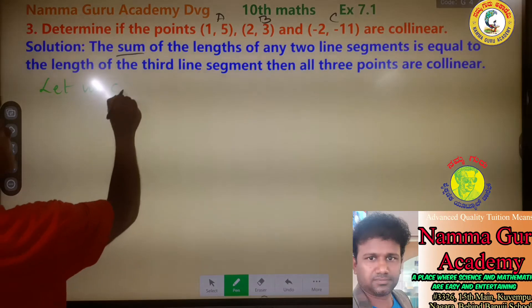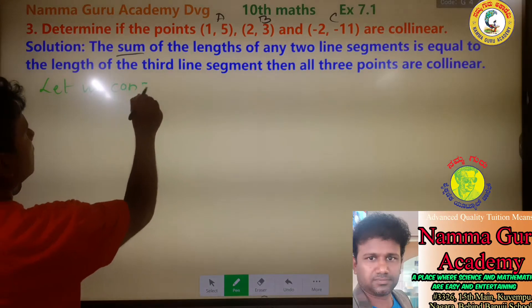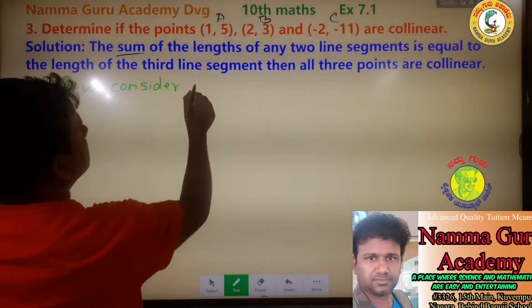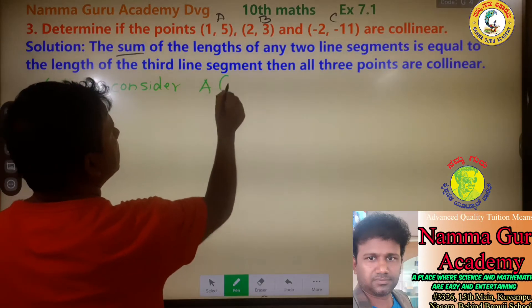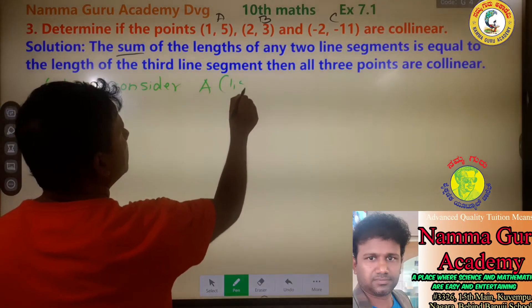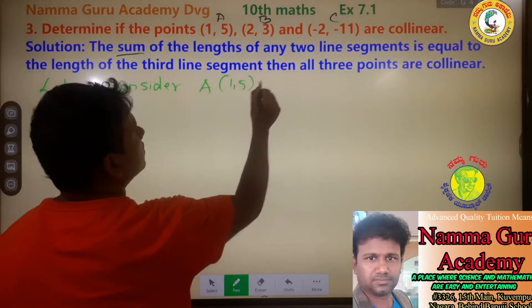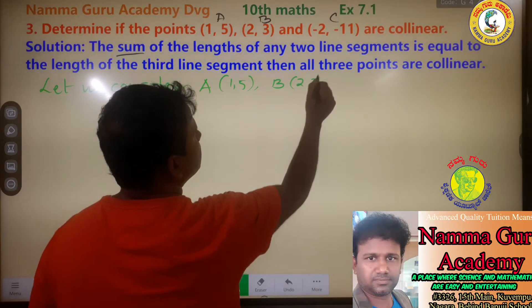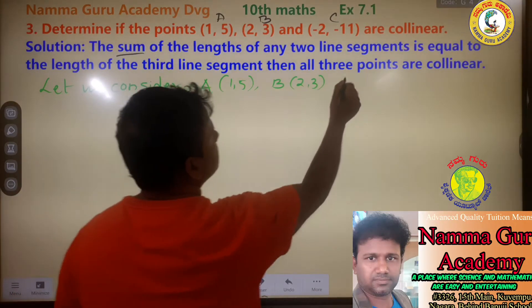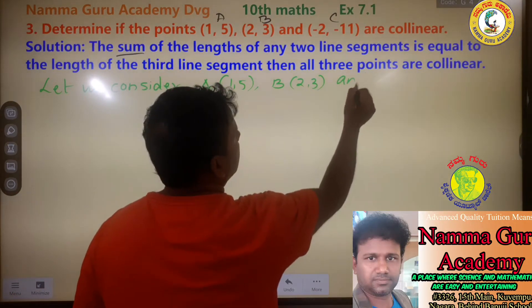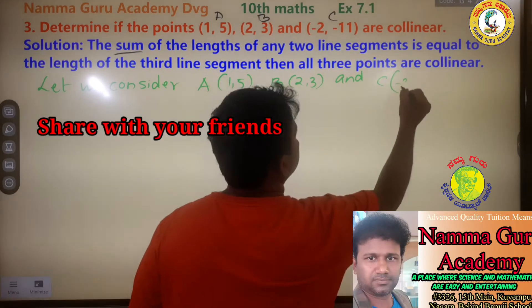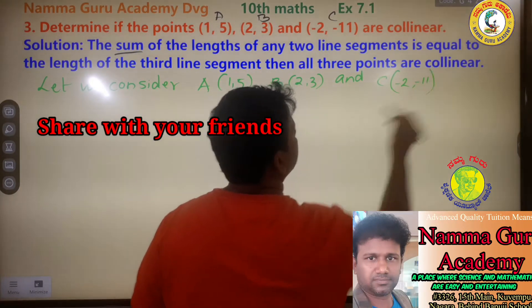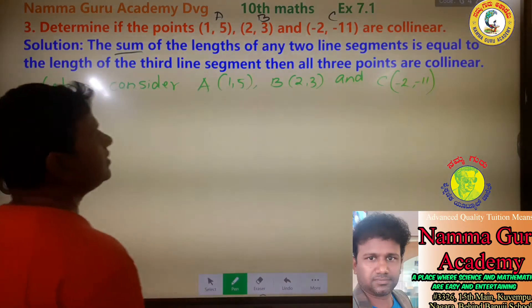Let us consider the points: A is (1, 5), B is (2, 3), and C is (-2, -11).